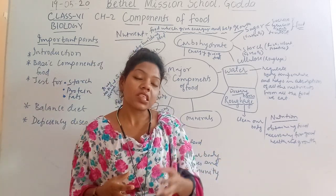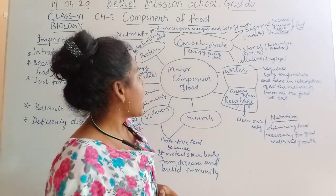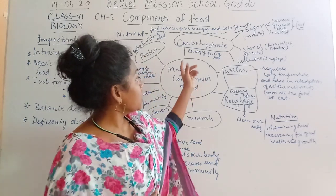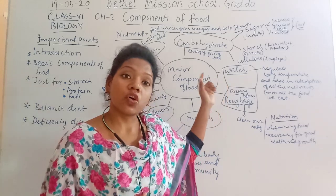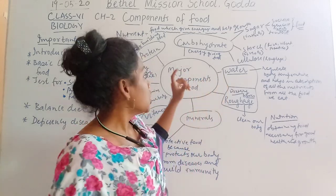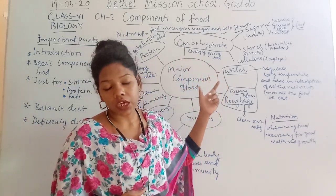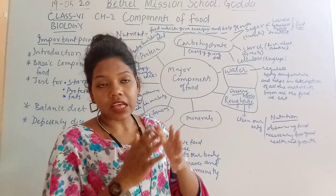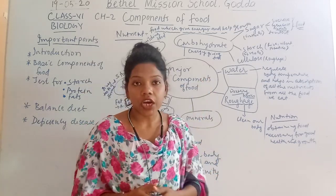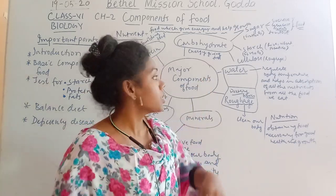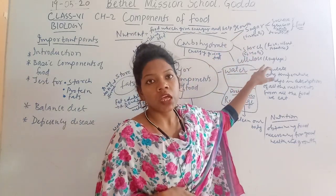Carbohydrates are very easily available in the market and in the environment, and they are the source of energy. Due to that, it is called energy-giving food. If you classify carbohydrates, it is divided into three parts: sugar, starch, and cellulose.